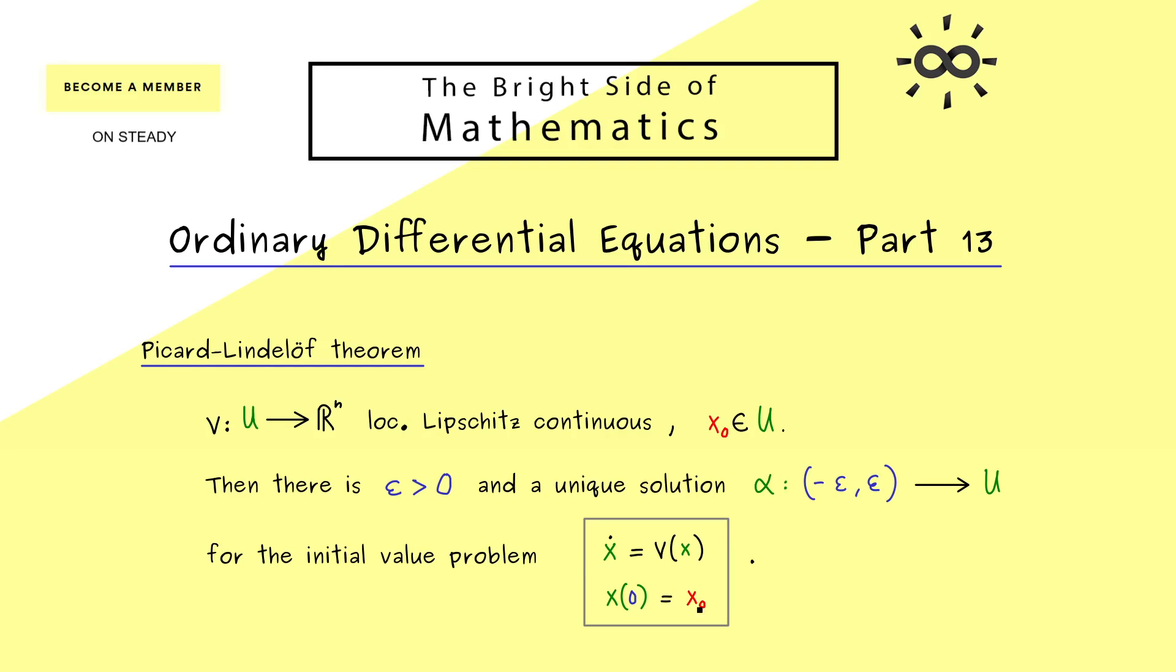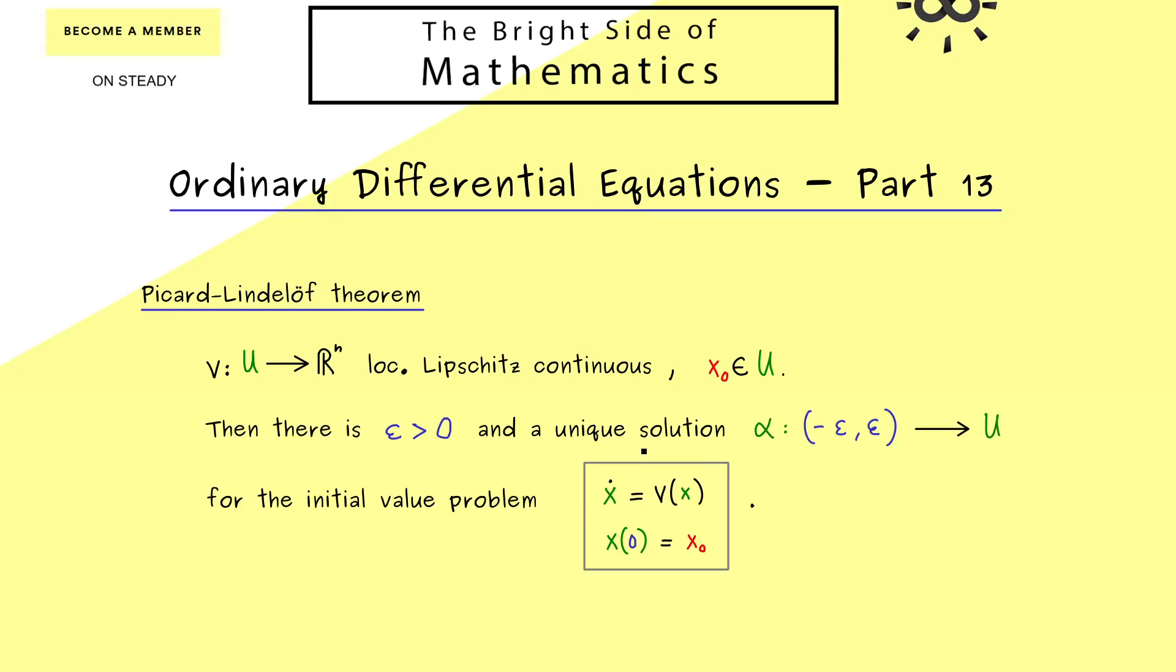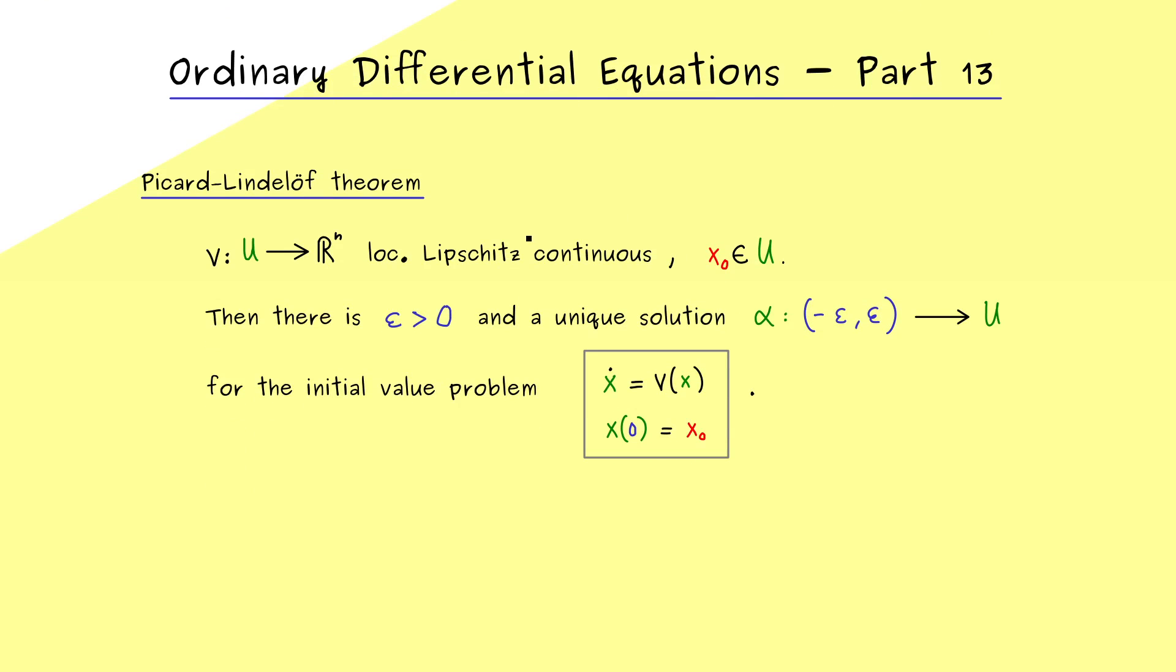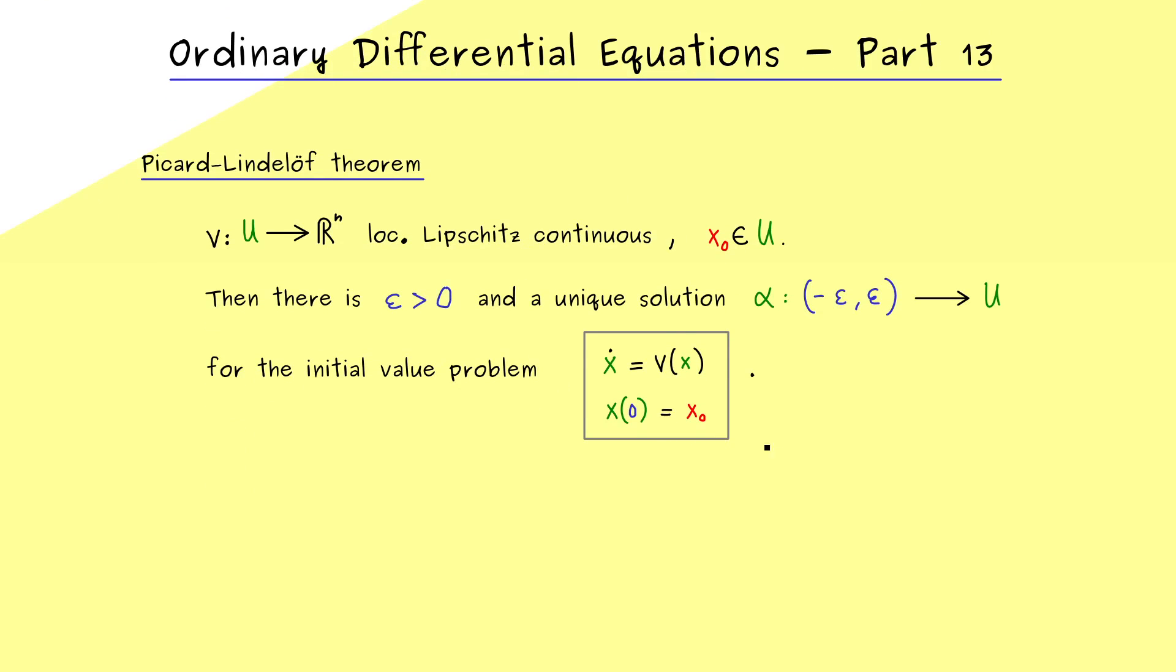So it definitely answers the question we had about the existence of solutions. And in fact we already knew before that a locally Lipschitz continuous function gives rise to unique solutions. And I should also tell you here that we get the existence of solutions also under weaker assumptions. However, this is not so important right now, because this description of Picard-Lindelöf is sufficient for our context.